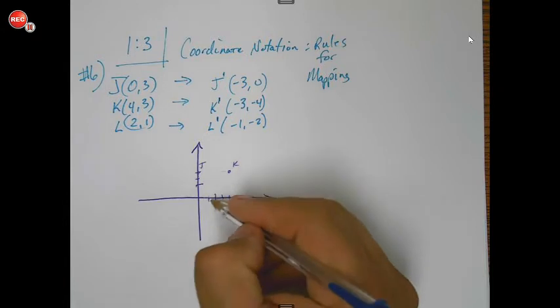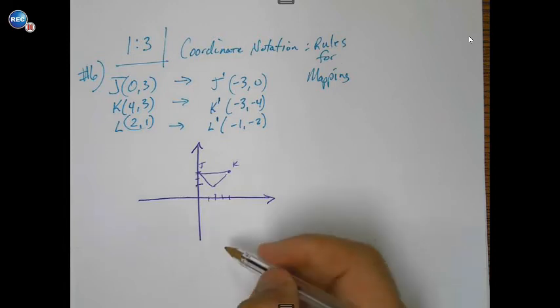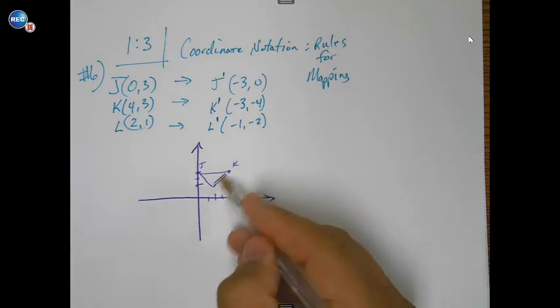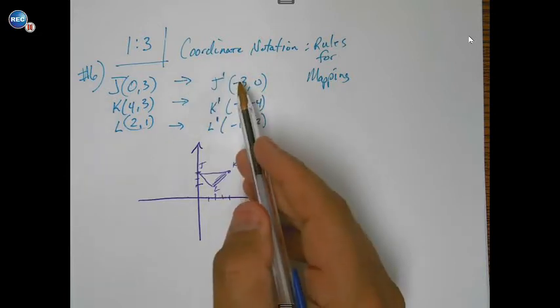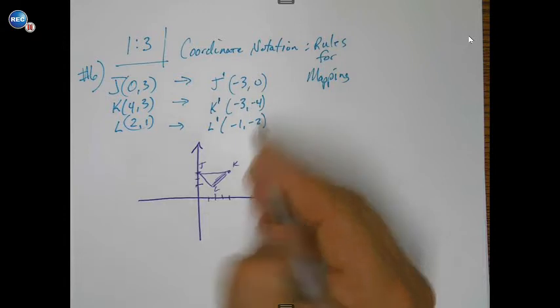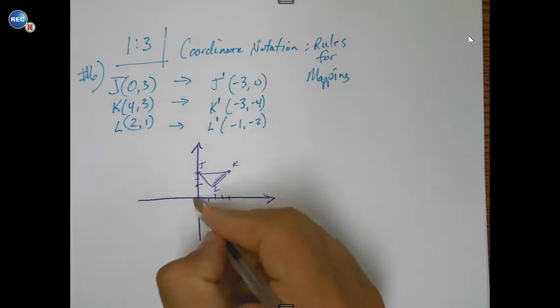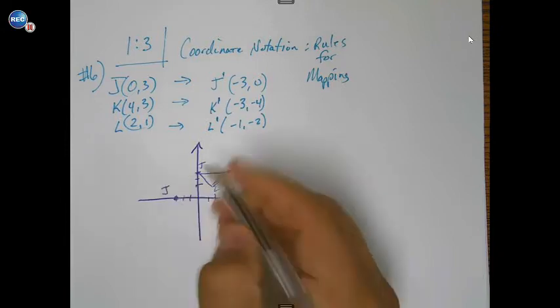L is 2, 1. So we'll go there. Right there. Okay, so L. All right, so now let's map their prime vertices, the ones that they're mapped to. Negative 3, 0. So negative 3, 1, 2, 3. That's J prime.